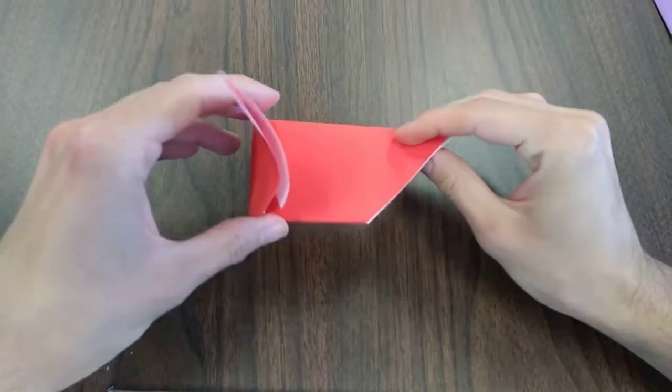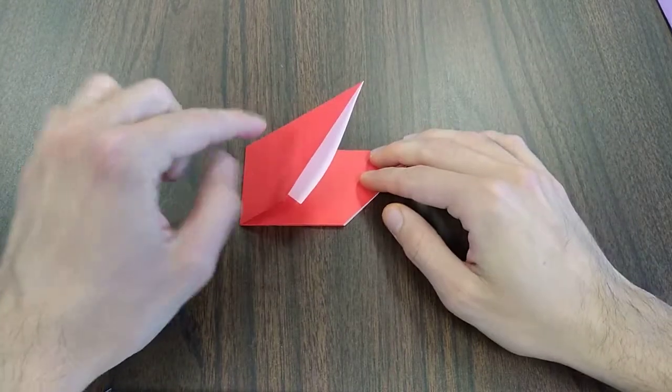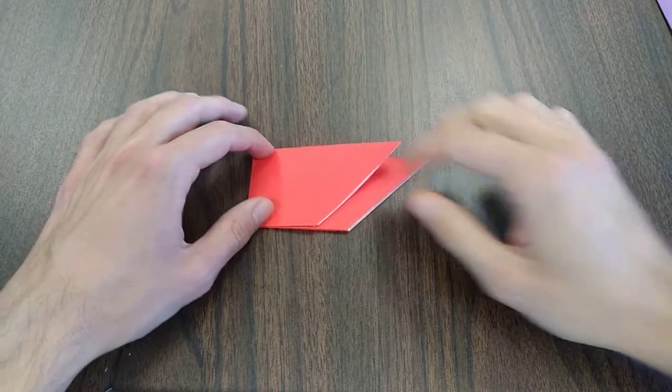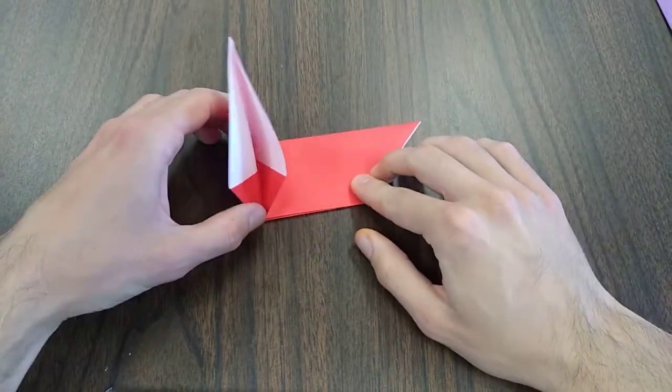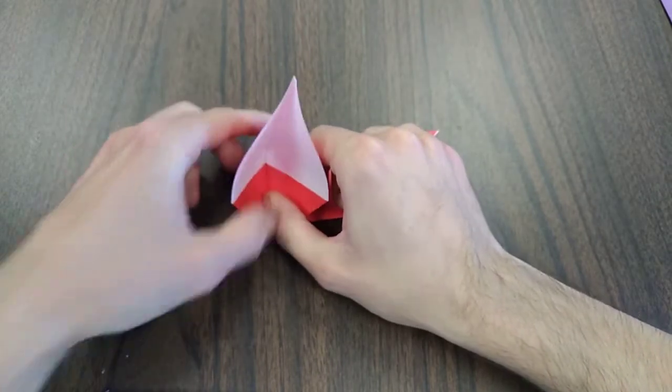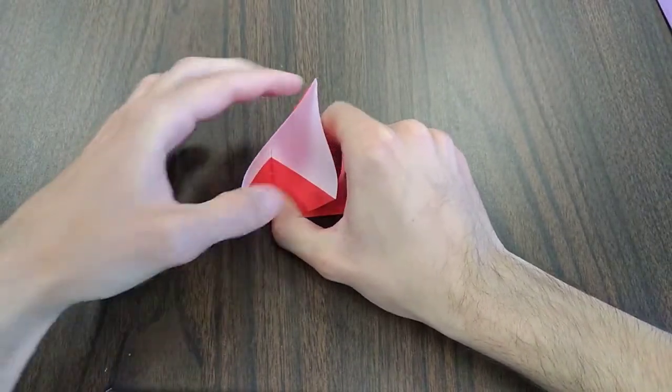Now your model should look like this. So with the shorter side facing you, pointing to the right, we're going to open it like this. We're going to open the inside, make sure it's nice and smooth.